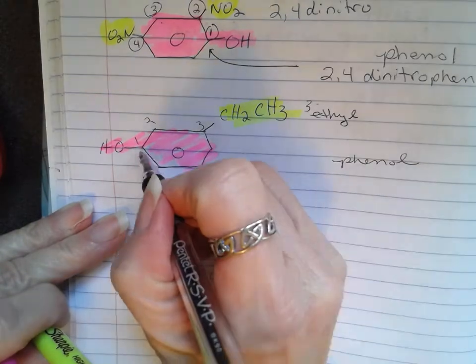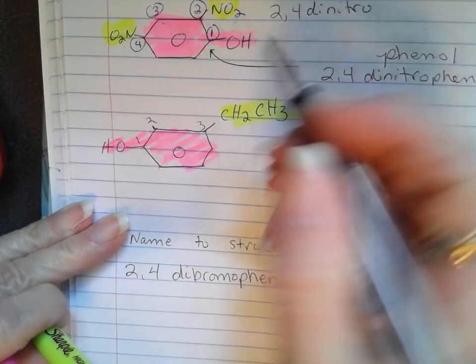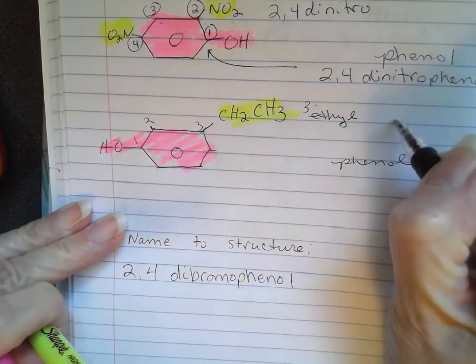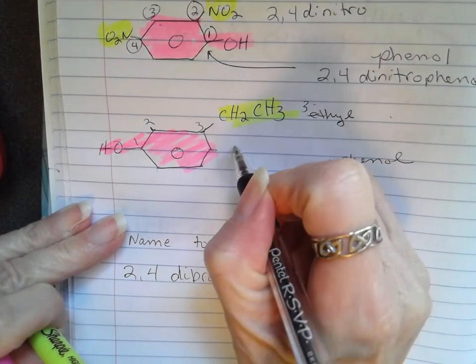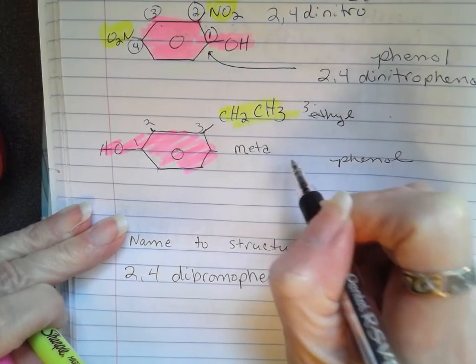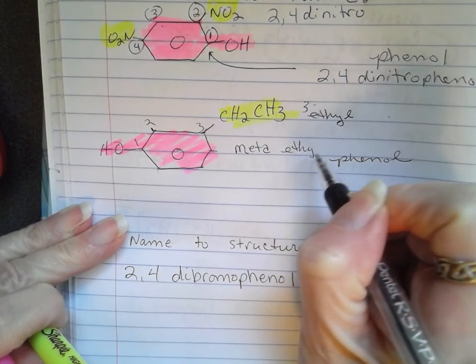So remember, this would be the ortho position. This would be the meta position. This would be the para position. So it would be very common to say M or meta ethyl phenol.